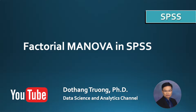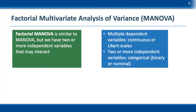Hi everyone. In this video we will discuss Factorial MANOVA. Factorial MANOVA is similar to Regular MANOVA, except that Factorial MANOVA can deal with multiple independent variables, whereas Regular MANOVA can only handle one independent variable. The key point is that both MANOVA methods are only appropriate when we have categorical independent variables and multiple continuous dependent variables. If we have more than one categorical independent variable, we need to use Factorial MANOVA.